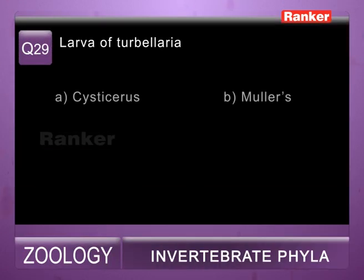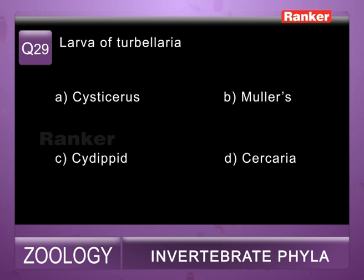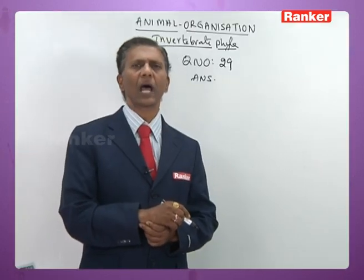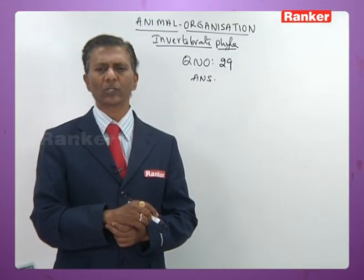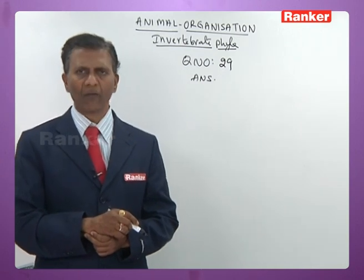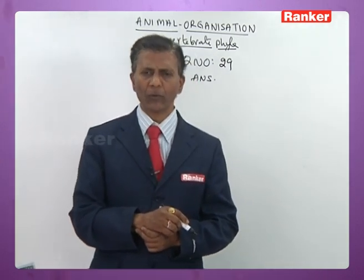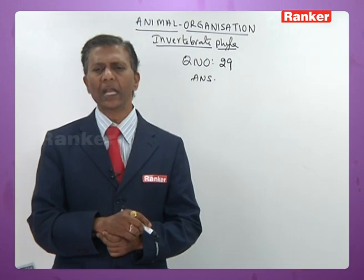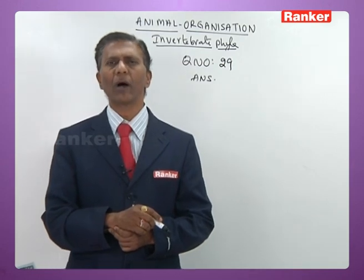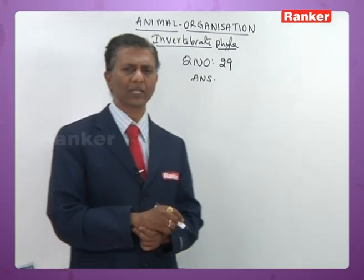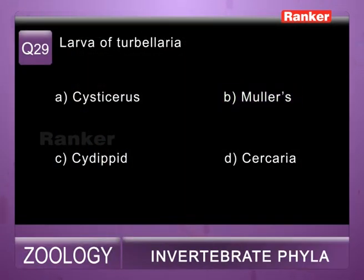Twenty-ninth question: larva of Turbellarians — a) cysticercus (larva of Taenia solium), b) Müller's larva (larva of Turbellarians), c) cydippid (larva of ctenophores), d) cercaria (larva of trematodes). So the answer for twenty-ninth question is b) Müller's larva.